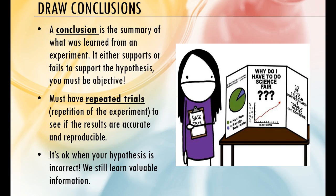Drawing a conclusion is the summary of what you learned from an experiment — it either supports or fails to support the hypothesis. You must be objective: objective means you have an open mind and don't let bias cloud your decisions, while subjective is when bias does influence what you're saying. A good experiment should have repetition — you don't just do it once, you do it many times to see if your results are accurate and reproducible. If your hypothesis is wrong, it's okay — you still get a ton of information. Scientists often spend years studying one or two things, constantly revising their hypothesis and going down new paths. That is how scientific inquiry works.